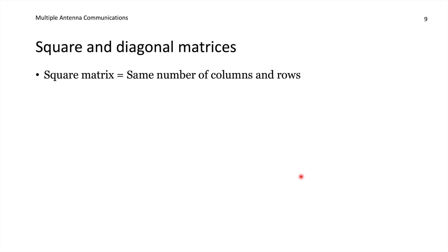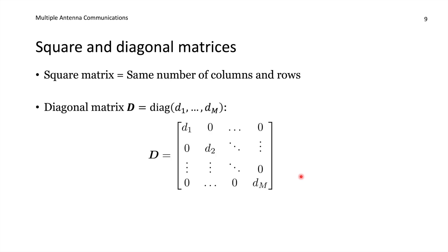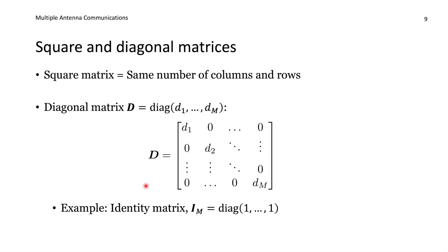There are special types of matrices with special names. A square matrix has the same number of columns as rows. A diagonal matrix of size m contains values d1 to dm along its diagonal with all other elements equal to zero, written as diag(d1,...,dm). One particularly common diagonal matrix is the identity matrix, which has ones along its diagonal, written as I-m.